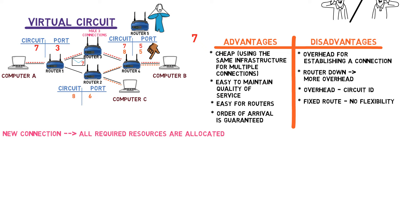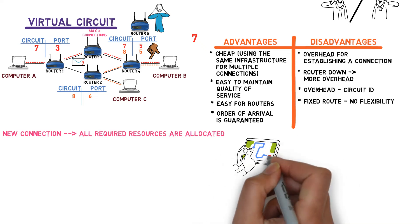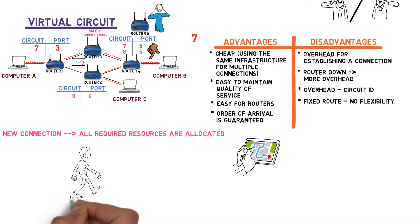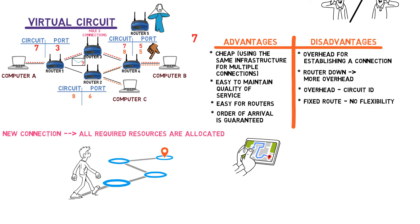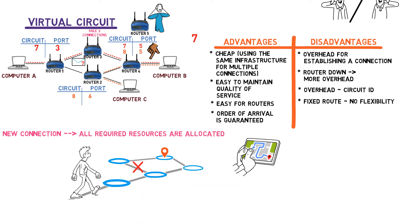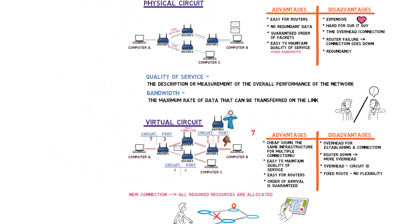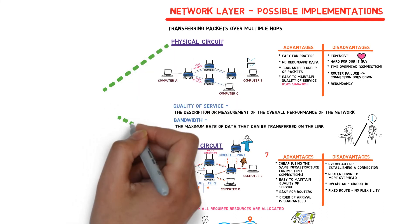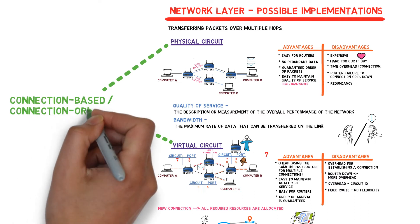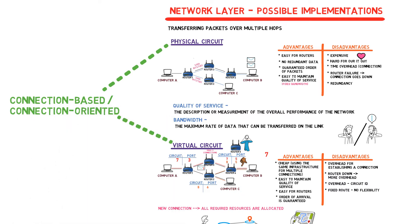Remember that when we first presented the third layer, we compared it to the navigation app Google Maps. When we use Google Maps and specify our destination, we have a route to drive through, but this route may change. If a car accident on a certain road causes a major traffic jam, Google Maps can change its mind and tell us to take another way. This is not possible in virtual circuit networks since they are connection-based. In fact, both implementations we have covered — physical circuits and virtual circuits — are connection-based or connection-oriented implementations.